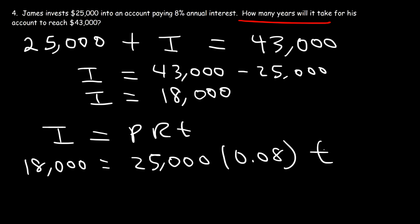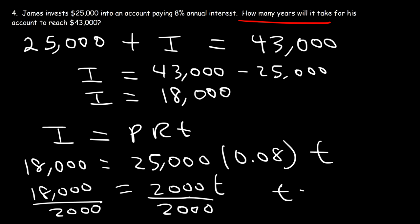So first, let's multiply $25,000 by 0.08. So you should get $2,000. And now let's divide both sides by $2,000. So $18,000 divided by $2,000, we can cancel the three zeros. So it's equivalent to 18 divided by 2, which is 9. So it's going to take 9 years for his account to go from $25,000 to $43,000 if he's receiving an 8% annual interest rate. So it takes 9 years to earn $18,000 in total interest.